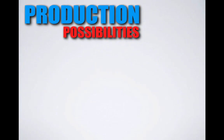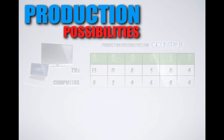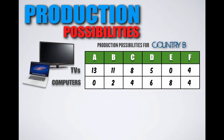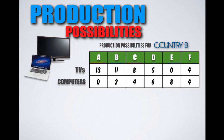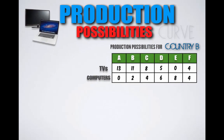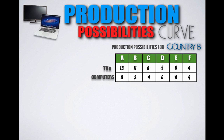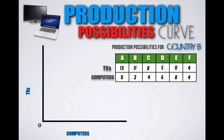Here we have a production possibility schedule for Country B. Given their current available resources, Country B can produce TVs and computers in various combinations. We can also visualize opportunity cost and production possibilities by creating a production possibilities curve for Country B. We begin by drawing two axes, one for each good: the vertical axis for TVs, the horizontal axis for computers.